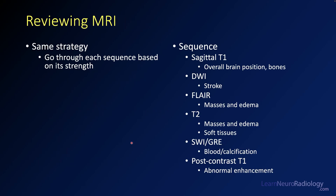When reviewing an MRI, you use a similar strategy — going through each sequence based on its strength. On sagittal T1, think about overall brain position and the bones. On diffusion, you're looking for stroke and water movement abnormalities. FLAIR is a great workhorse — almost all abnormal pathology will be bright on FLAIR — useful for masses and edema. T2 is similar but without suppression, making it harder to see brain parenchyma though great for soft tissues in the orbits. Susceptibility or gradient echo is used to look for blood or calcification, and post-contrast T1 is used to look for abnormal enhancement.